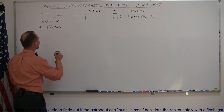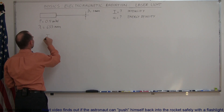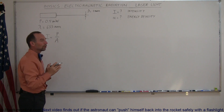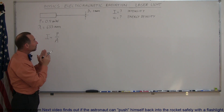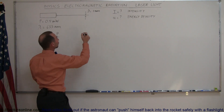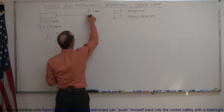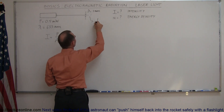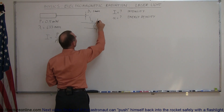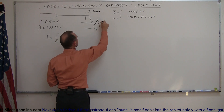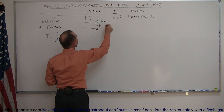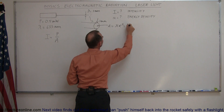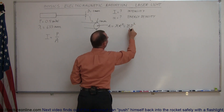Let's start with the intensity of the beam. We know that I is equal to the power of the source divided by the area over which it spreads. Since the beam doesn't spread, we look at the cross-sectional area of the beam, which has a diameter of 1 millimeter. So the area is always the same — it's equal to πr², which equals πd²/4.